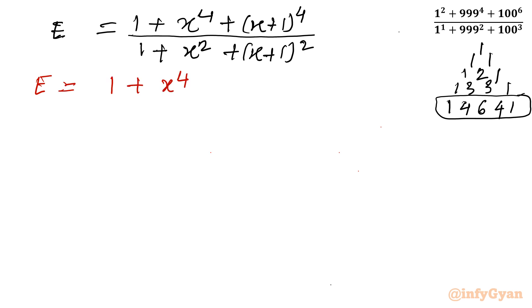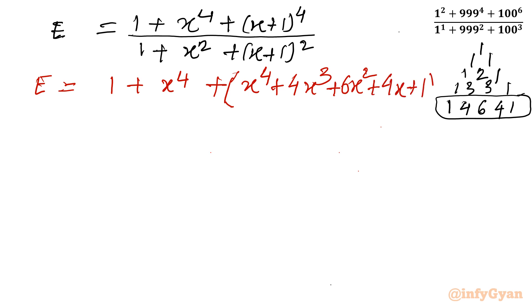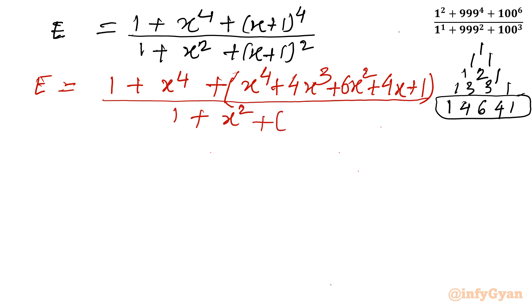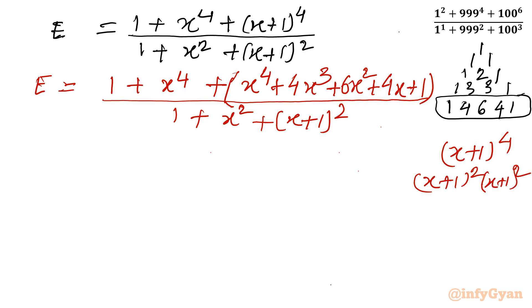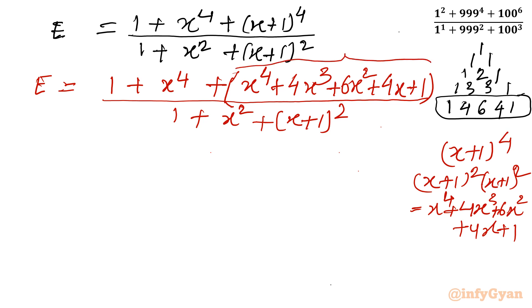Writing the numerator: 1 + x^4 + (x^4 + 4x^3 + 6x^2 + 4x + 1). The same result is obtained by direct multiplication. Both approaches give x^4 + 4x^3 + 6x^2 + 4x + 1 for the expansion.